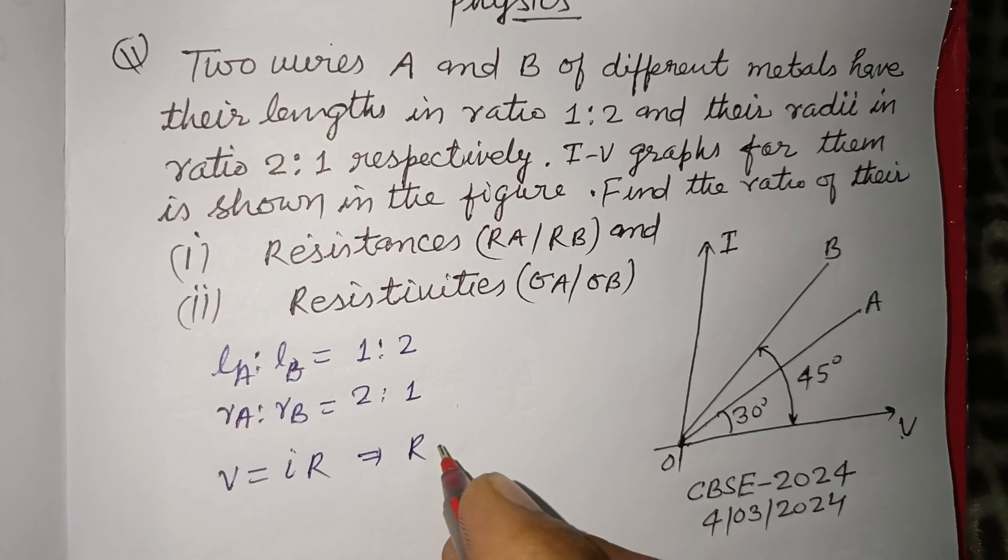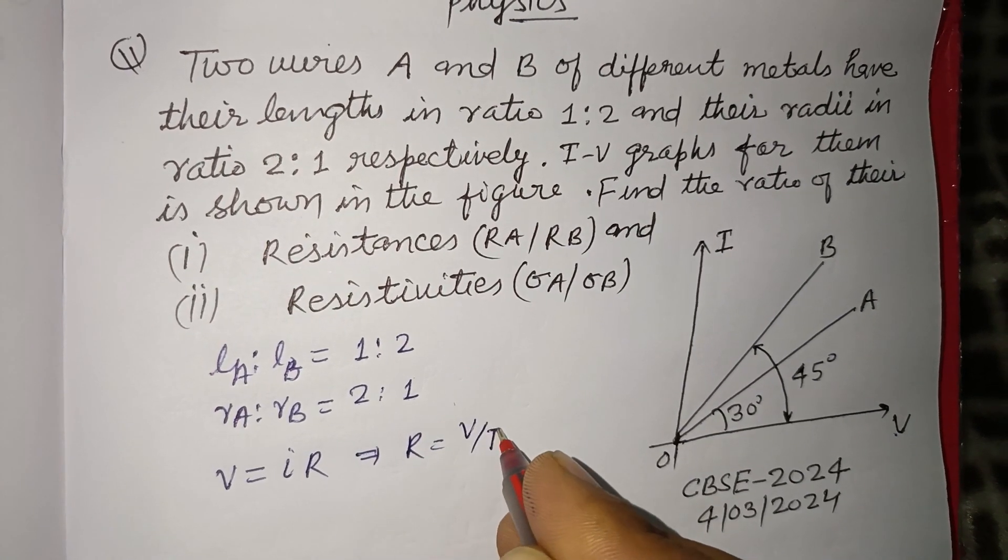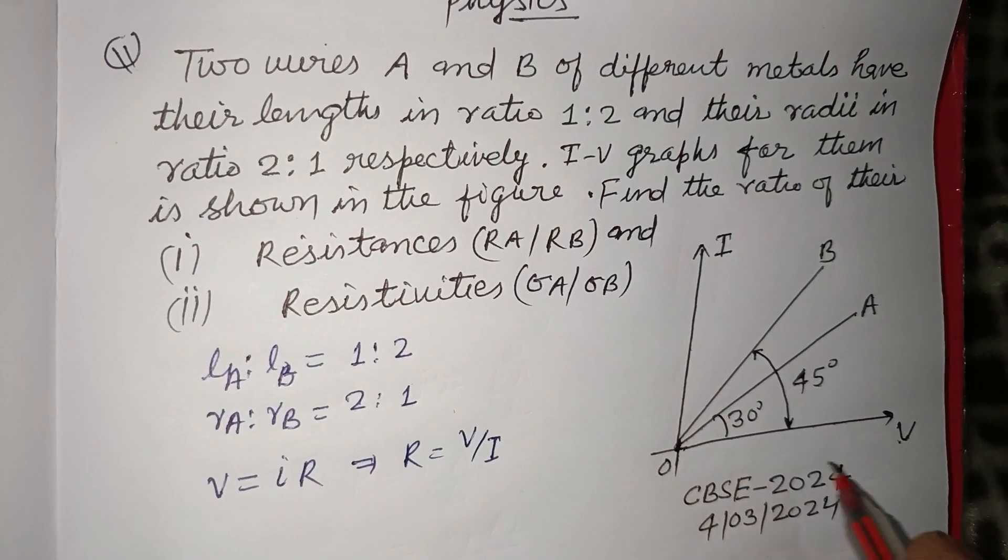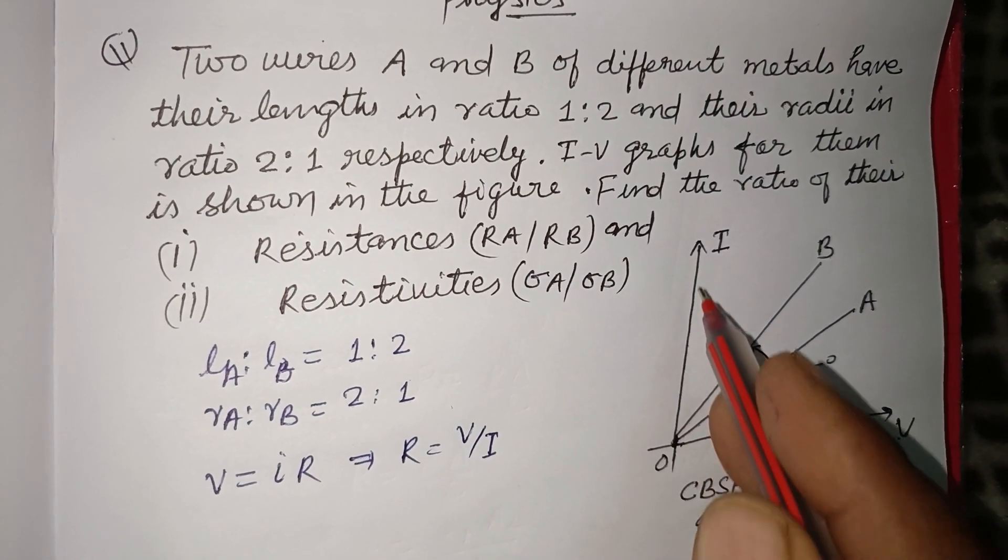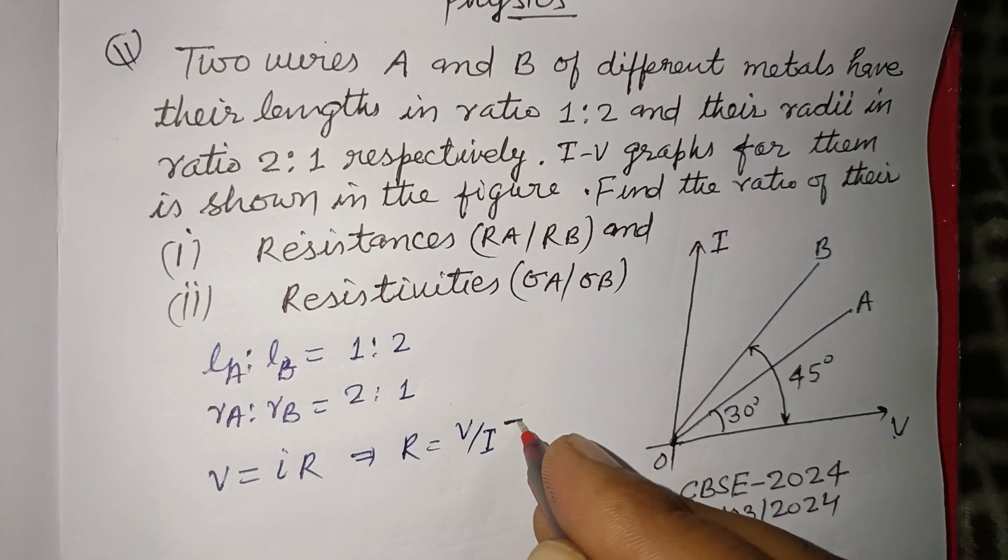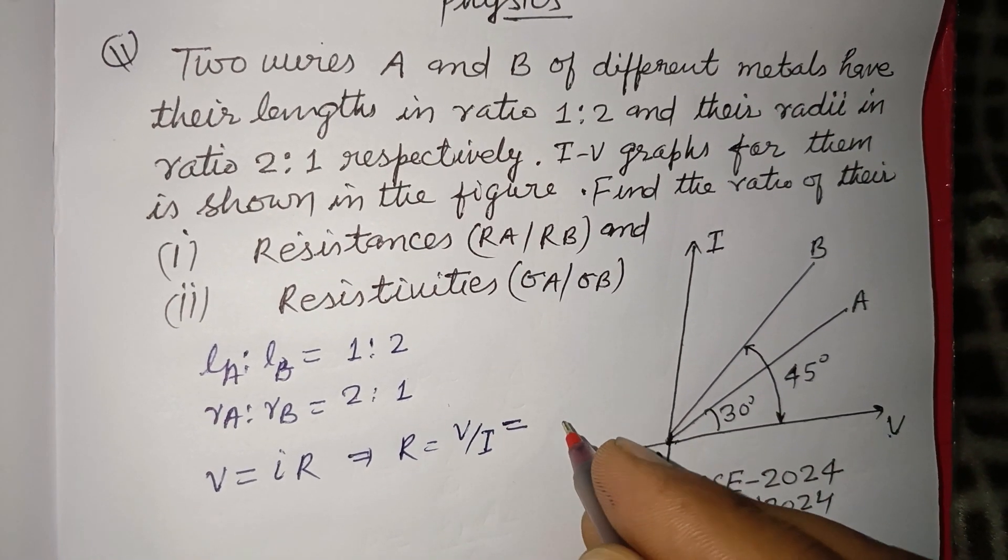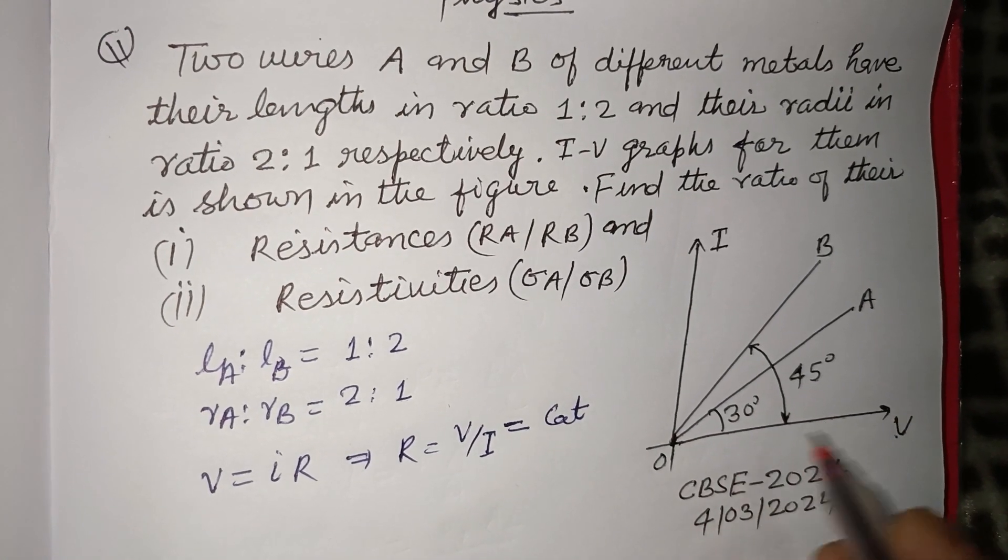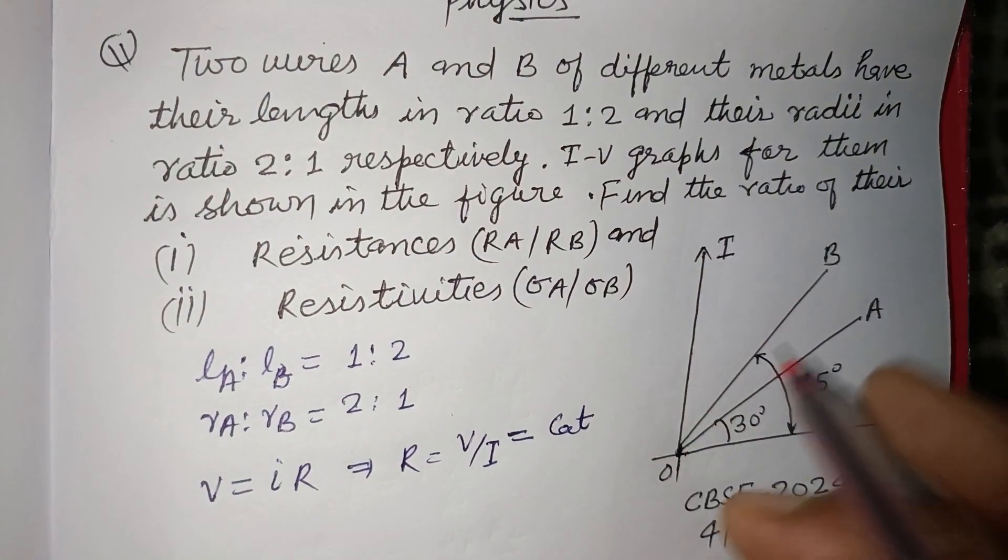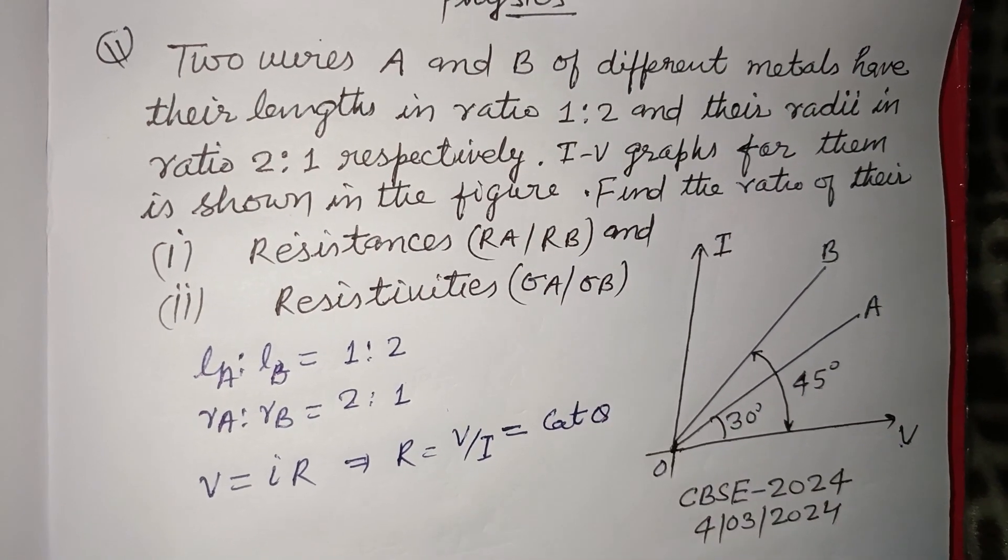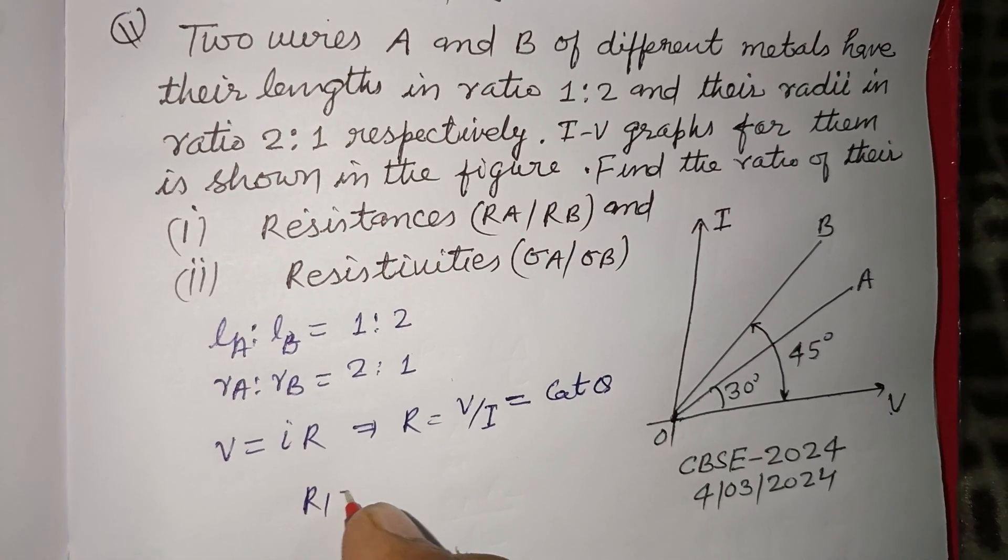If we take V as base and I as perpendicular, this becomes cot θ because this is base over perpendicular, so R = V/I = cot θ.